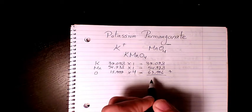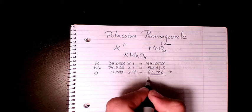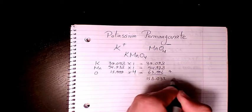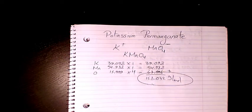And then you need to add them all - that makes it 158.032 grams per mole. That's the molar mass of potassium permanganate.